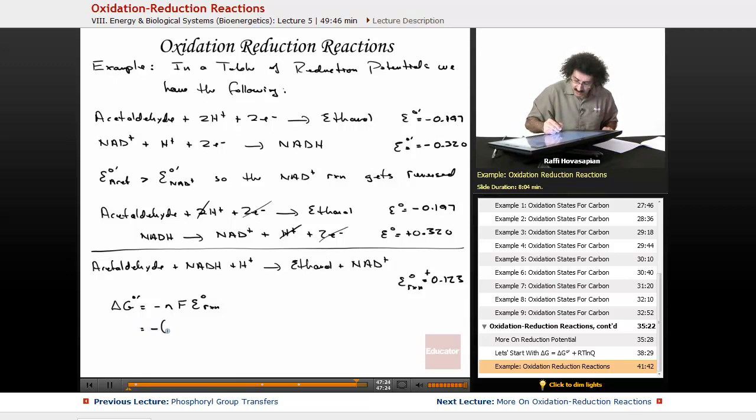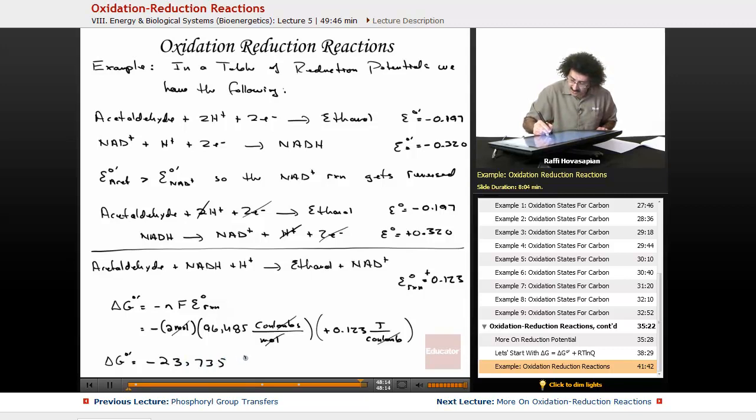It equals minus, N is the number of electrons that are transferred. We have two electrons that are transferred. Two moles of electrons are transferred. We have 96,485 coulombs per mole of electrons. And of course, we have the potential, which is positive 0.123 volts, which is a joule per coulomb. I just wanted you to see that the units cancel. And when you multiply all this out, you get a delta G for this reaction equal to minus 23,735 joules.